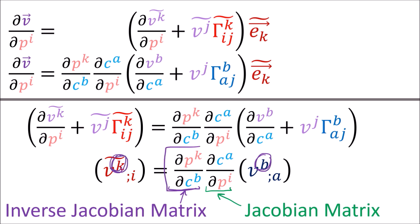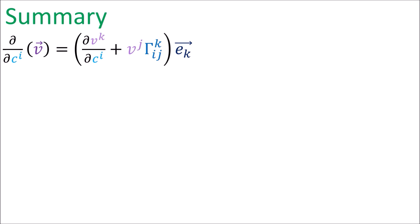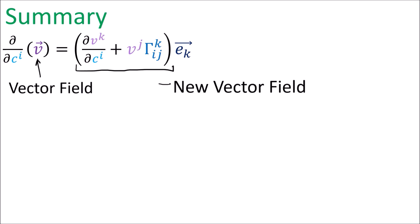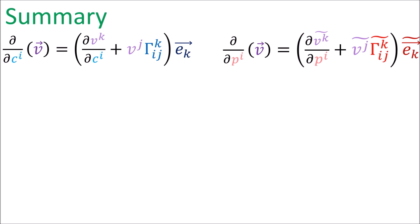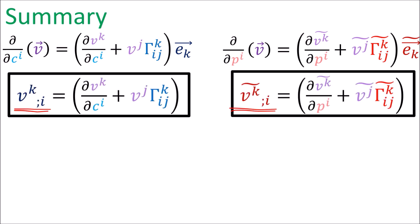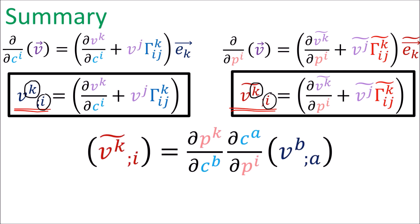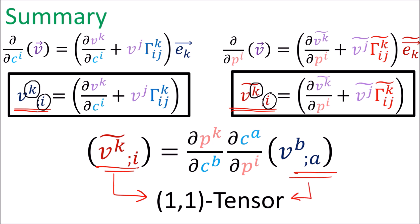The inverse Jacobian transforms the contravariant index, and the Jacobian transforms the covariant index. To summarize: the covariant derivative of a vector field is another vector field that depends on the direction of differentiation. Looking at the two main directions in 2D space, we get two resulting vector fields for the covariant derivative — one for each covariant derivative in the main coordinate directions. We can write the components of these vector fields using the semicolon notation, which are the kth components of the covariant derivative vector field when differentiating in the direction of the ith coordinate. To convert between these components, we use one covariant transformation rule with the Jacobian and one contravariant transformation rule with the inverse Jacobian, so these covariant derivative components with the semicolon form a 1-1 tensor.